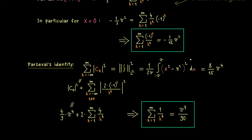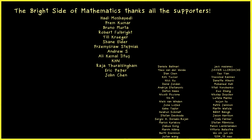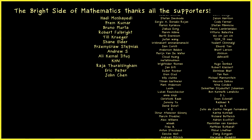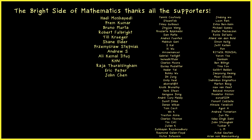So to summarize: by having a suitable function that you can expand into a Fourier series, you might get out nice sum formulas. Our only restriction was needing a continuous piecewise C1 function. However, since we only used pointwise convergence at one point, we might ask whether we can weaken that assumption — and exactly this question we will answer in the next videos. Hope to see you again, have a nice day, bye!